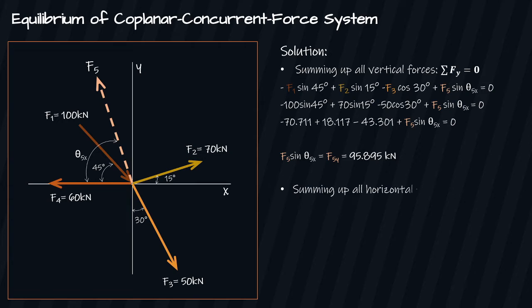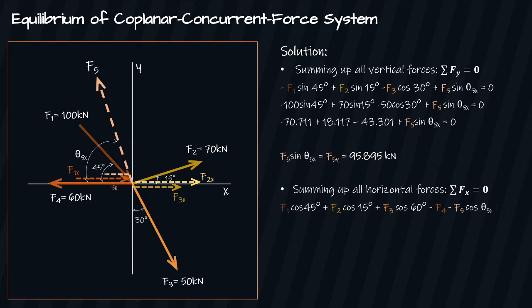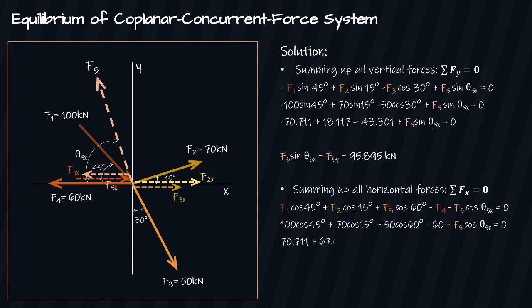Moving on, we sum up all horizontal forces: summation of Fx equals zero. We get: F1 cosine 45° plus F2 cosine 15° plus F3 cosine 60° minus F4 minus F5 cosine theta-5x equals zero. Substituting the values of F1, F2, F3, and F4 and simplifying, we get F5 cosine theta-5x, the horizontal component of F5, equal to 103.325 kilonewtons.